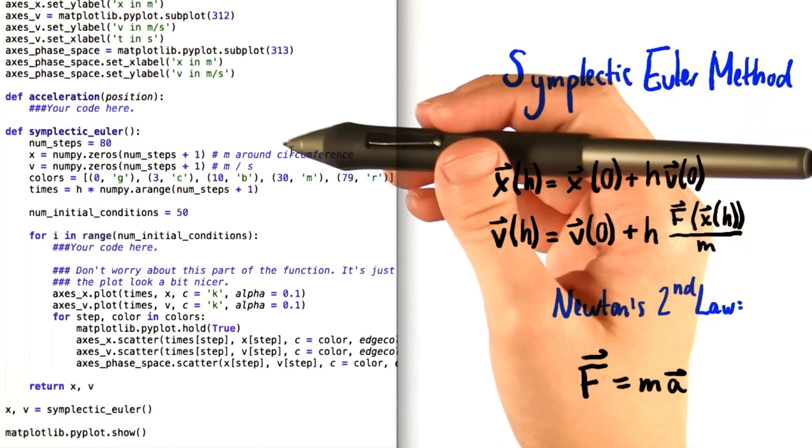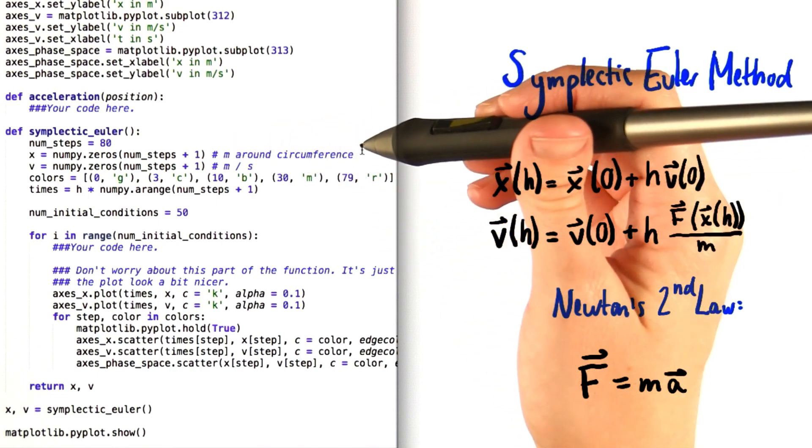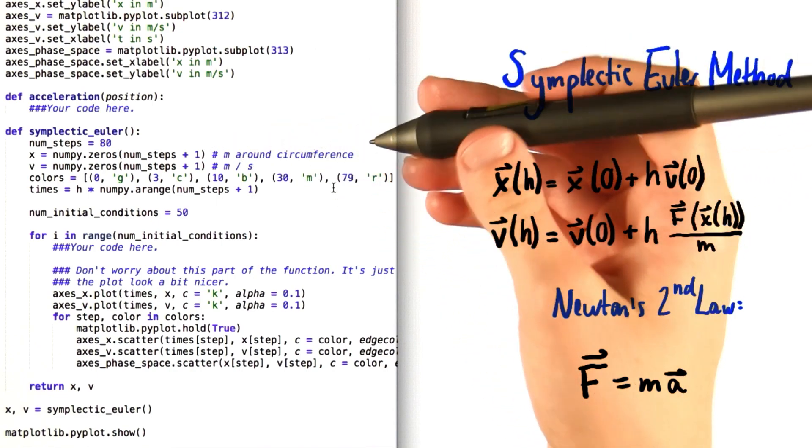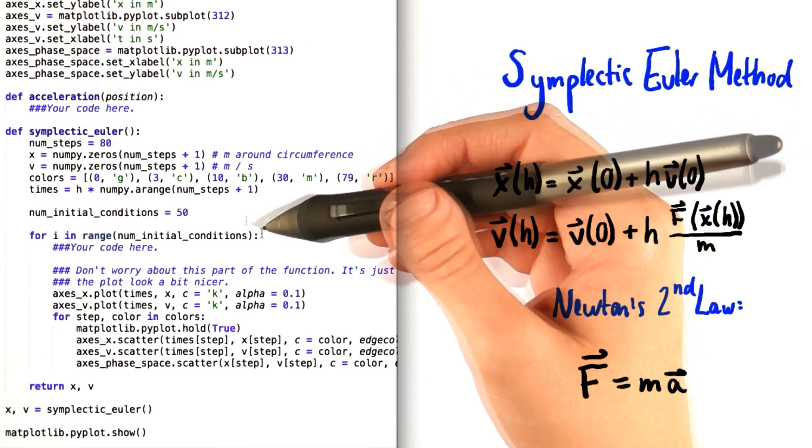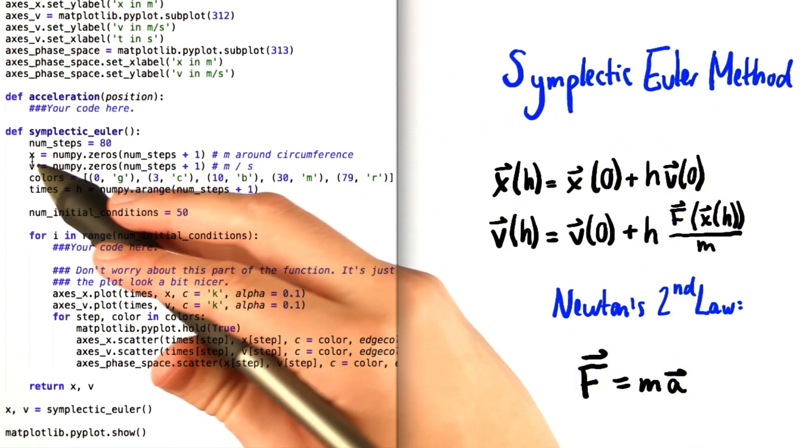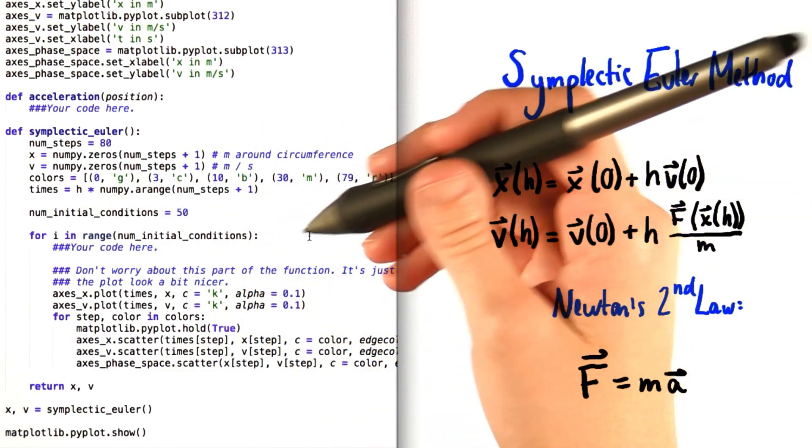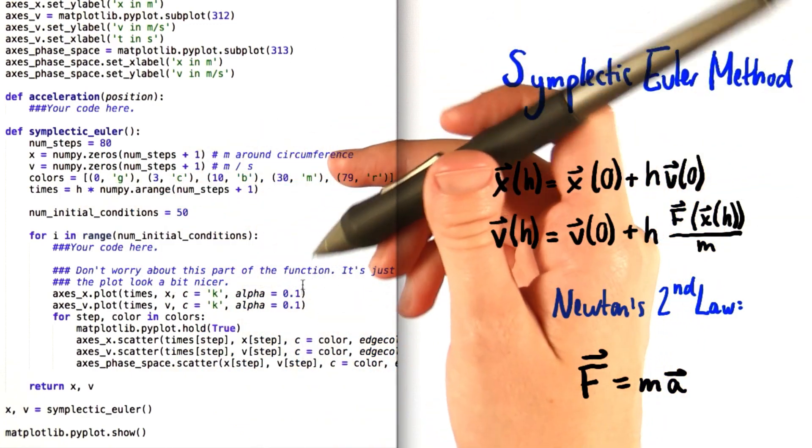So looking back at our code, you can see that we've created empty arrays for you, for position and for velocity. It's up to you to fill these arrays in, including the initial conditions. So remember, you'll need to initialize x and v by saying x of 0 and v of 0 equals something that you're going to figure out.